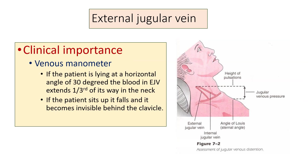The external jugular vein serves as a useful venous manometer. Normally, when the patient is lying at a horizontal angle of 30 degrees, the blood in the external jugular vein fills up nearly one third of its length in the neck. If the patient sits up, it falls and becomes invisible. It can therefore be used as a venous manometer for measuring jugular venous pressure.